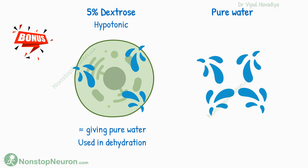Thus, giving pure water causes hemolysis and other damage. With 5% dextrose, the ultimate result is similar to giving pure water only. But because of the relatively slower entry of glucose into the cells, this result is achieved more gradually without harmful consequences.